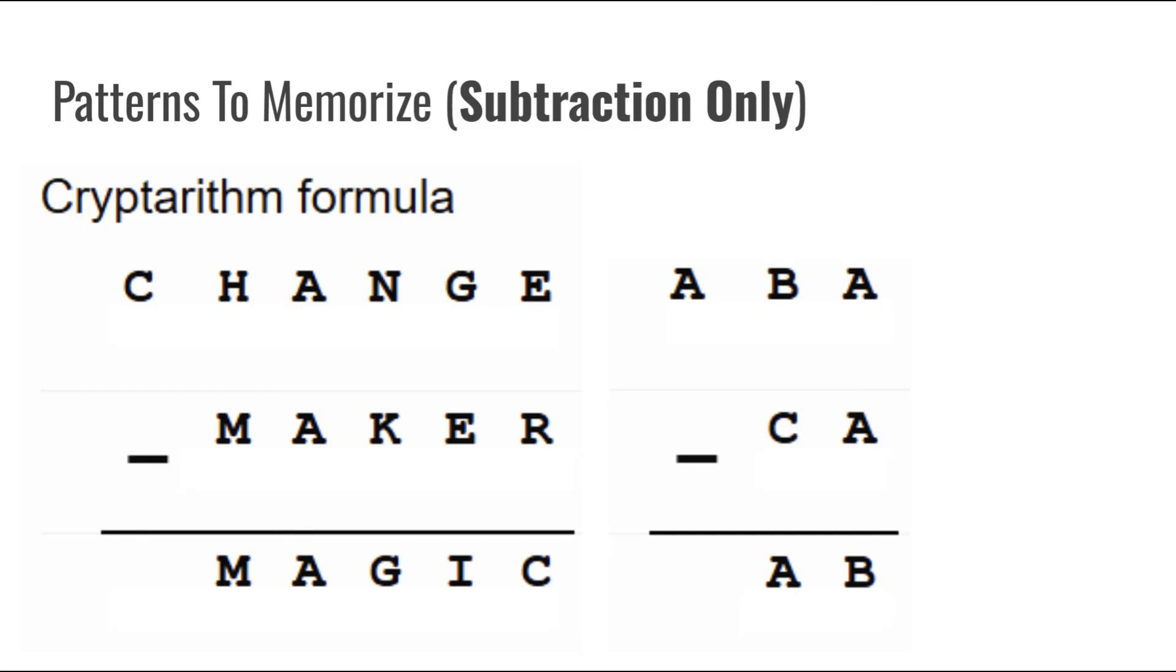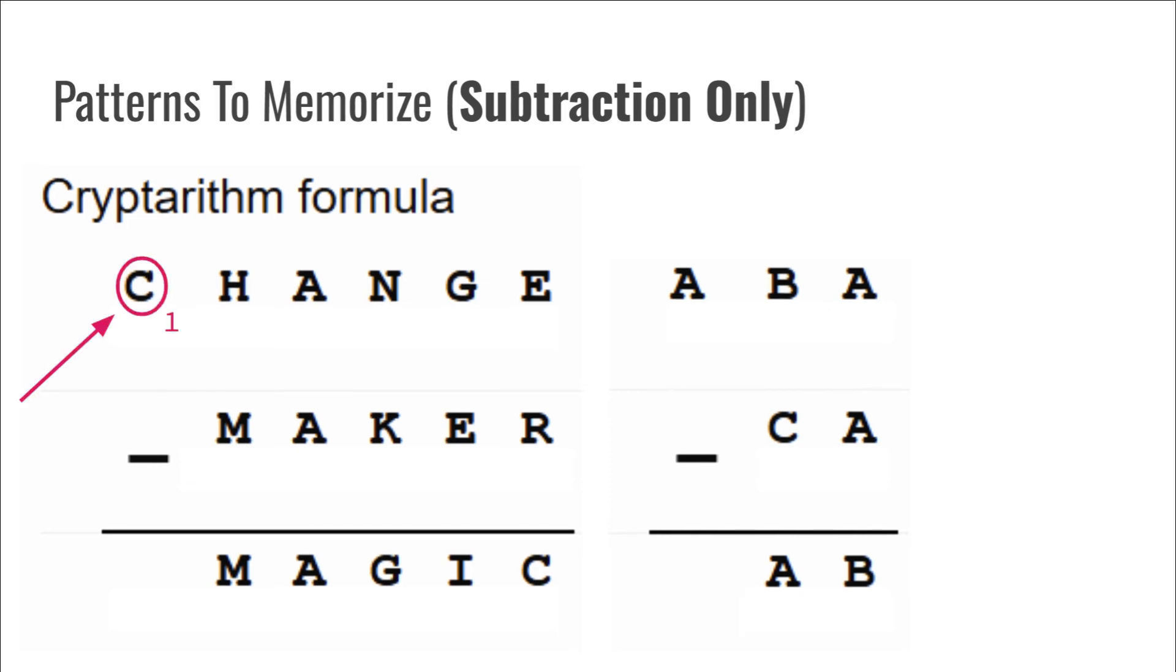If the C was 2 instead, then we would have a 1 left over in this column for the answer. If the C was 9 instead, then we would have an 8 left over in this column. This lets us know that 1 is the only number that would work to regroup and be left over with 0 when we get the answer.